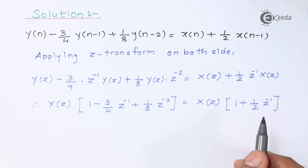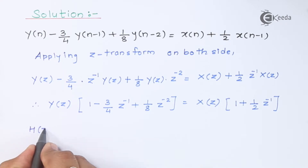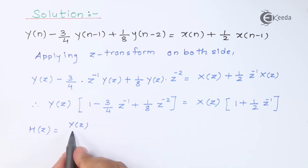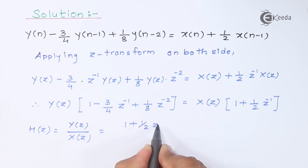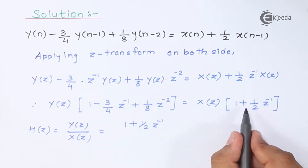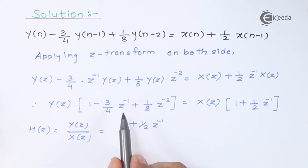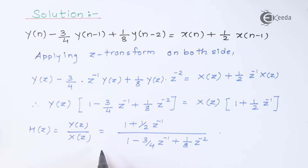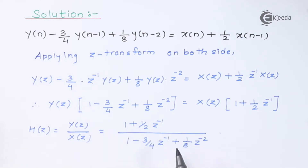To get the transfer function H(z), we take the ratio Y(z)/X(z). The right-hand side has [1 plus half z⁻¹] and the left-hand side denominator is [1 minus 3/4 z⁻¹ plus 1/8 z⁻²]. Once we have H(z) in this form, we compare it with the standard H(z) equation to obtain the values needed for the Direct Form 1 and Direct Form 2 structures.